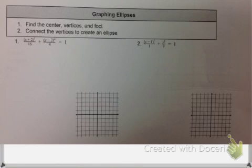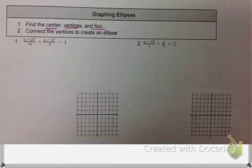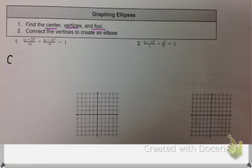Now we are going to take all the things we've learned and use those key elements to graph our ellipses. To graph an ellipse, you need to know the center, the vertices, and the foci, which we now know how to find. Then all you do is connect the vertices to form an ellipse. So let's start with the center for number one — the center is going to be negative 2, positive 2.